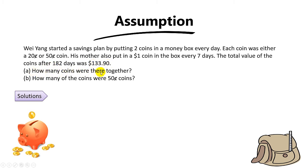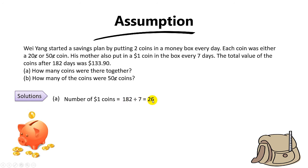For part A, how many coins were there altogether? If you are sharp enough, you'll notice that part A is actually testing the grouping concept, because for every group of seven days his mother puts in one extra one dollar coin. So the question is: how many groups of seven days are there in 182 days? To do that, you take 182 divided by 7, and you get 26 groups.